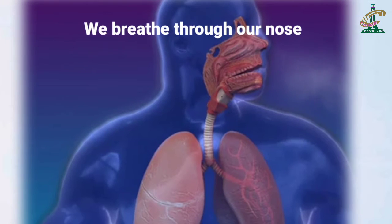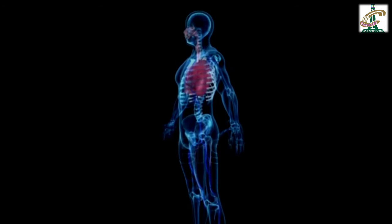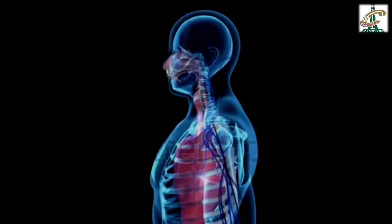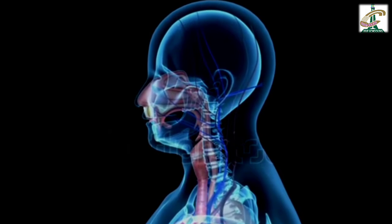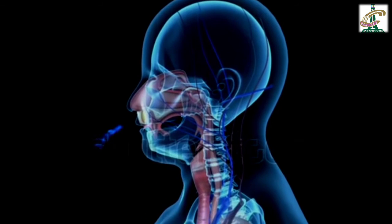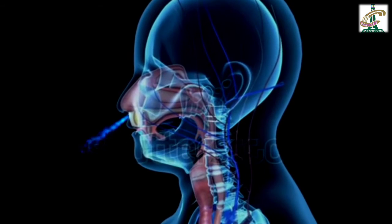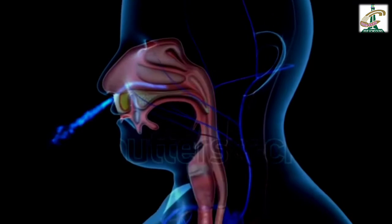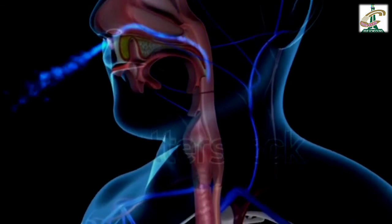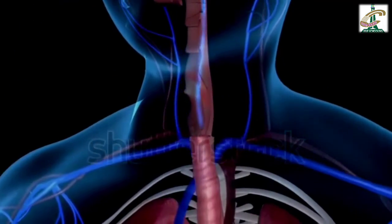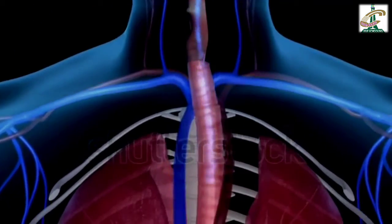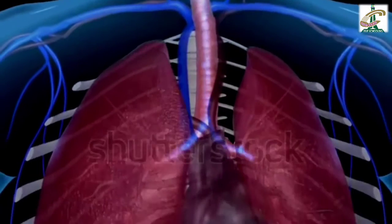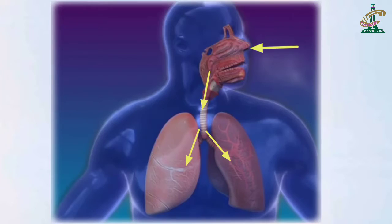The air goes in through our nose, then down the windpipe. Then the air reaches the lungs and the lungs expand. First, the air goes through the nose to the windpipe, then it reaches the lungs and we breathe in.